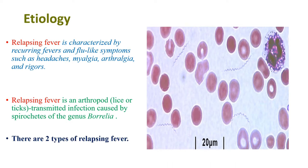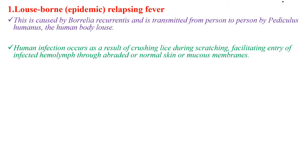There are two types of relapsing fever. The first is louse-borne, or epidemic relapsing fever. This is caused by Borrelia recurrentis and is transmitted from person to person by Pediculus humanus, the human body louse. Human infection occurs as a result of crushing lice during scratching, facilitating the entry of infected hemolymph through abraded or normal skin or mucous membrane.